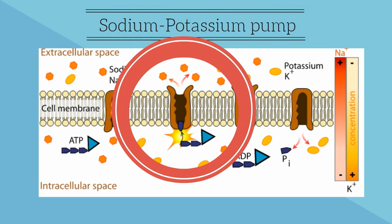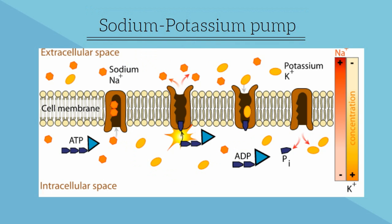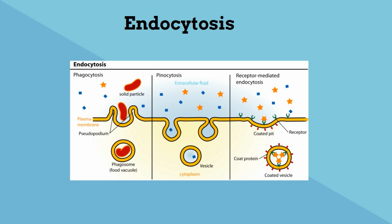The sodium potassium pump moves 3 sodiums for every 2 potassium ions into the cell. The cell uses ATP as energy, and the channel changes its shape and allows the sodium and potassium to move into and out of the cell. Another example of active transportation is endocytosis.